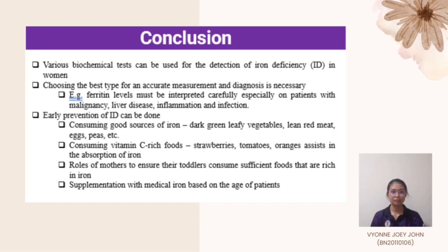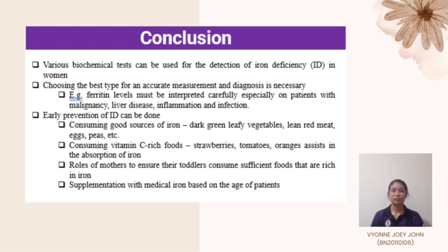Some prevention steps include consuming good sources of iron such as dark green leafy vegetables, lean red meats, eggs, and peas. Consuming vitamin C-rich foods such as strawberries, tomatoes, and oranges also assists in the absorption of iron. It is also important for mothers to ensure their toddlers and children consume sufficient iron-rich foods, and supplementation with medical iron based on the age of the patient should be given to those with iron deficiency.